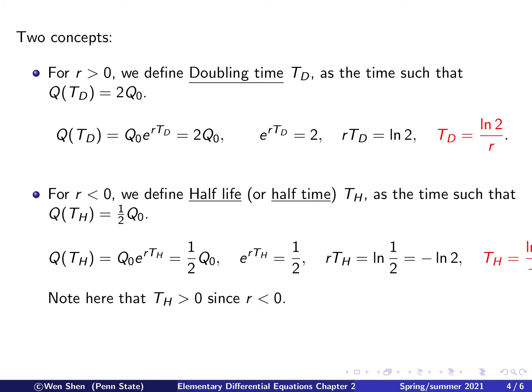Okay, so Q at TH shall be half of Q0. Let's plug in the equation. Q at TH will be Q0 times e to the rTH and it shall be half Q0. And then again, we get rid of the Q0 here and we get e to the rTH is half, which is this one.